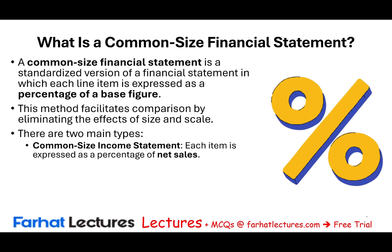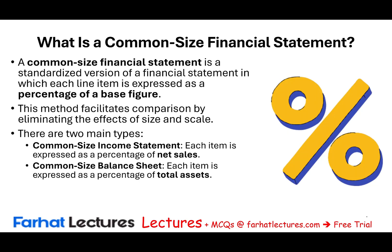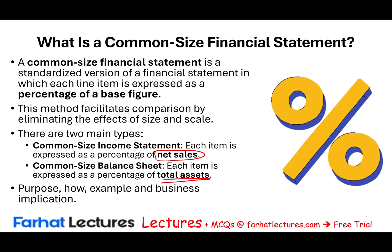There are two main types of common-size statements. One is the income statement, representing everything as a percentage of sales or net sales. On the balance sheet, we look at everything as a percentage of total assets. We're going to look at the purpose, dive deeper into why we use this, and how we compute it — which is pretty straightforward.